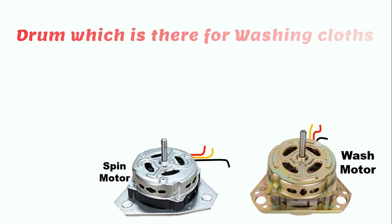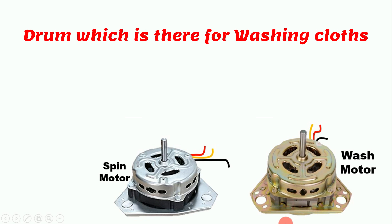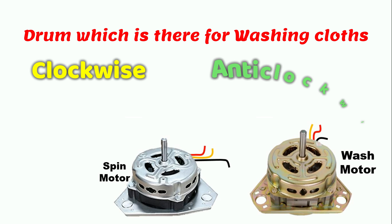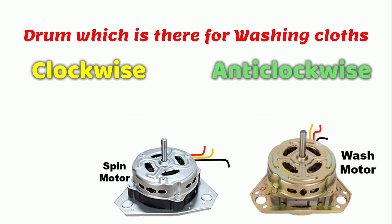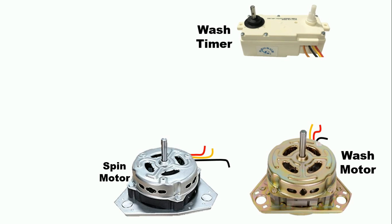The drum used for washing clothes rotates in two directions — clockwise and anti-clockwise. To rotate this motor in both directions, a timer is used, which is known as the wash timer.